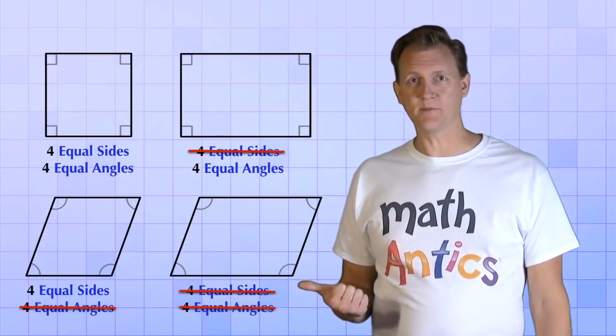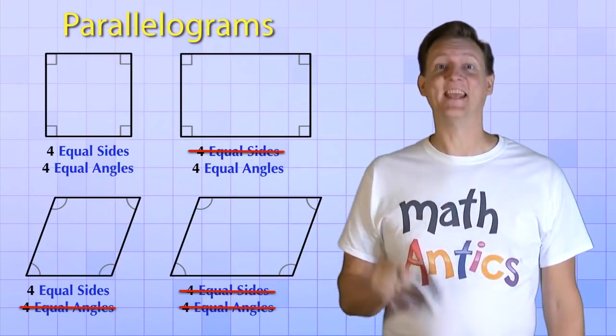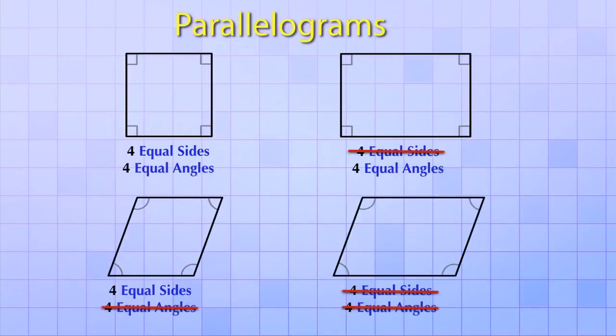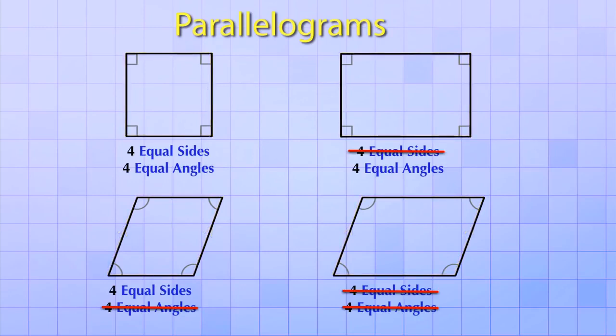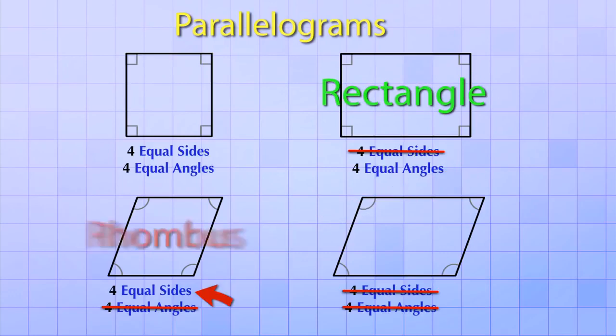Now wait a second… if that's the definition of a parallelogram, a quadrilateral that's made from two pairs of parallel sides, then wouldn't all these other shapes be parallelograms too? Exactly! All of these shapes are parallelograms, just like they're all quadrilaterals. It's just that we have special names for them if their angles are all equal, or if their sides are all equal, a rhombus, or if both their sides and their angles are all equal.